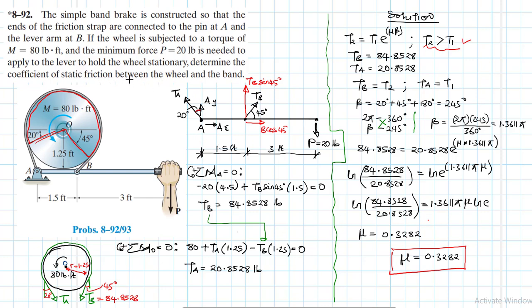This is the coefficient of static friction between the wheel and the band when a force of P equal to 20 pounds is applied to bring the rotating wheel to a stationary position. I hope the video was helpful — if it was, please give it a thumbs up, subscribe, and share the channel. See you in the next screencast.